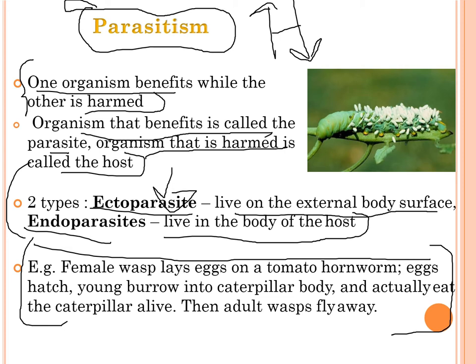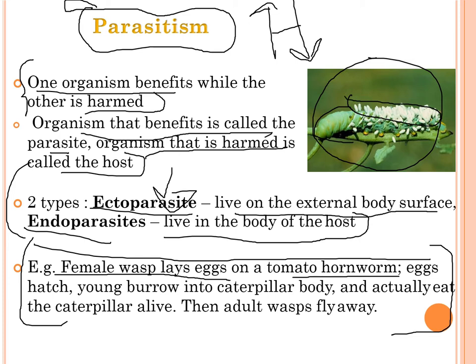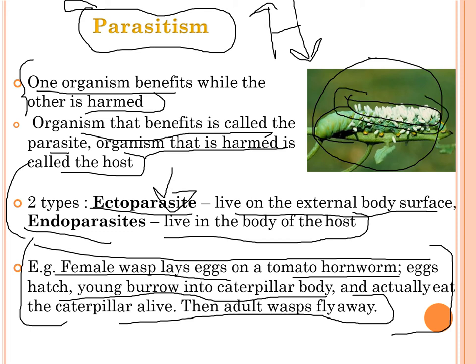An example of parasitism: a female wasp lays eggs on the tomato hornworm. The eggs hatch and the young burrow into the caterpillar's body, actually eating the caterpillar alive, while the adult wasp flies away.